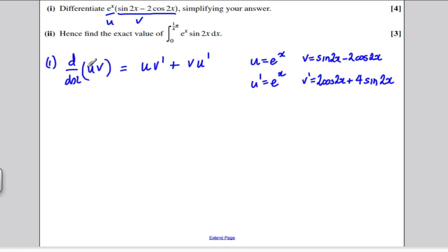So let's go ahead and use the product rule then. Working out this differential here, it's u, the first function, which is e to the x, times the differential. So it's going to be e to the x multiplied by 2 cos 2x plus 4 sin 2x. And it's going to be the function v plus v, which was sin 2x minus 2 cos 2x, all multiplied by u dashed, which is e to the x.